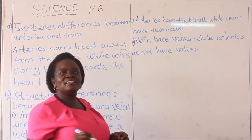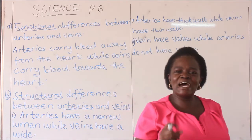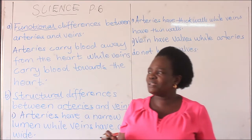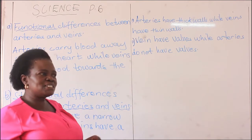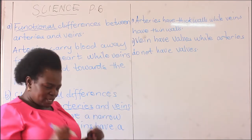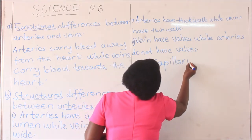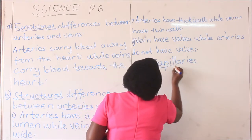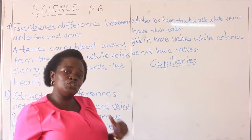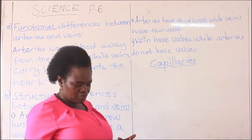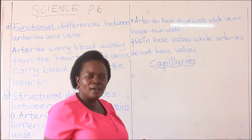Let us look at the last blood vessel. I told you we have three types of blood vessels. We have looked at arteries, we have looked at veins, and now we are looking at the very last one, which is capillaries. Blood vessels are tubes that carry blood to different parts of the body. So we are looking at capillaries — what are capillaries?